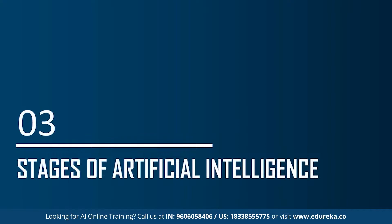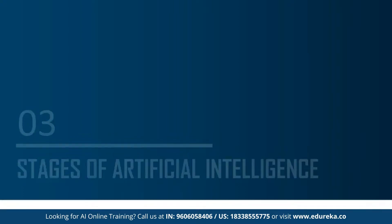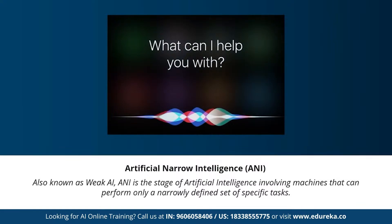Many videos and articles state that artificial general intelligence, artificial narrow intelligence, and artificial super intelligence are the different types of AI. To be more precise, these are actually the three different stages of AI — the types of AI are completely different from the stages. Under the stages: artificial narrow intelligence, artificial general intelligence, and artificial super intelligence.